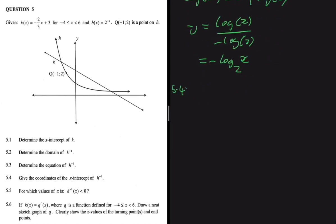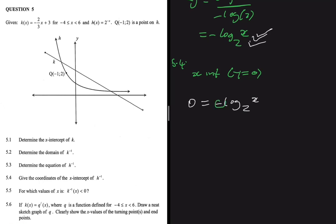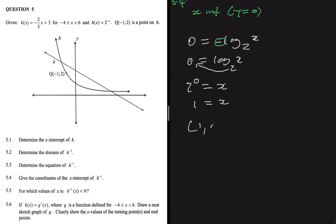5.4 asks for the coordinates of the x-intercept of h inverse. For the x-intercept, y equals 0. Substituting into the equation of h inverse: 0 equals minus log base 2 of x. Dividing both sides by minus 1 gives 0 equals log base 2 of x. Converting from log form: 2 to the power of 0 equals x. Since any number to the power of 0 is 1, x equals 1. So the coordinate of the x-intercept is (1, 0).